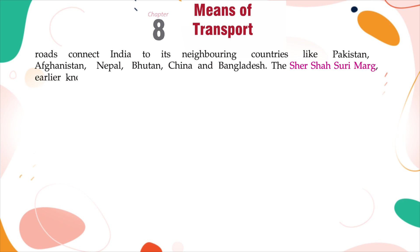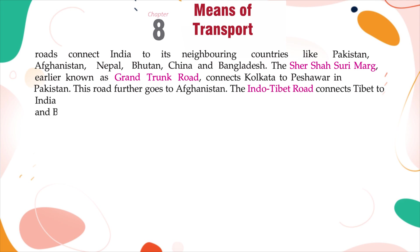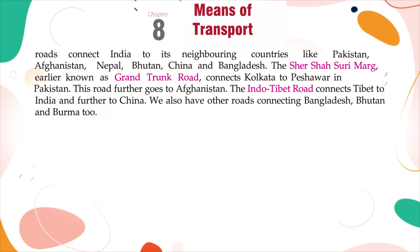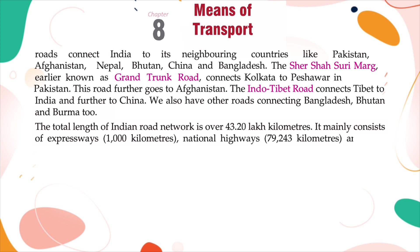The Sher Shah Suri Marg, earlier known as Grand Trunk Road, connects Kolkata to Peshawar in Pakistan. This road further goes to Afghanistan. The Indo-Tibetan Road connects Tibet to India and further to China. We also have other roads connecting Bangladesh, Bhutan, and Burma. The total length of the Indian road network is over 43.20 lakh kilometers. It mainly consists of expressways (1,000 km), national highways (79,243 km), and state highways (1,31,899 km).